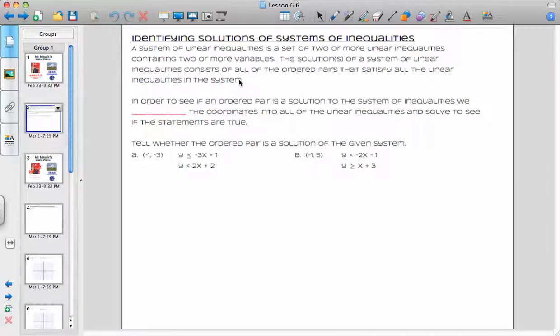Today we're going to talk about what the systems are, and I have a definition right here, same as you'll see in your book. It says, a system of linear inequalities is a set of two or more linear inequalities containing two or more variables. The solutions of a system of linear inequalities consist of all of the ordered pairs that satisfy all the linear inequalities in the system.